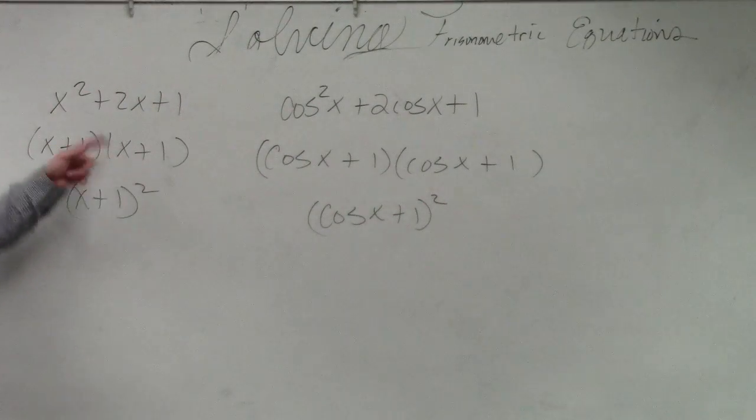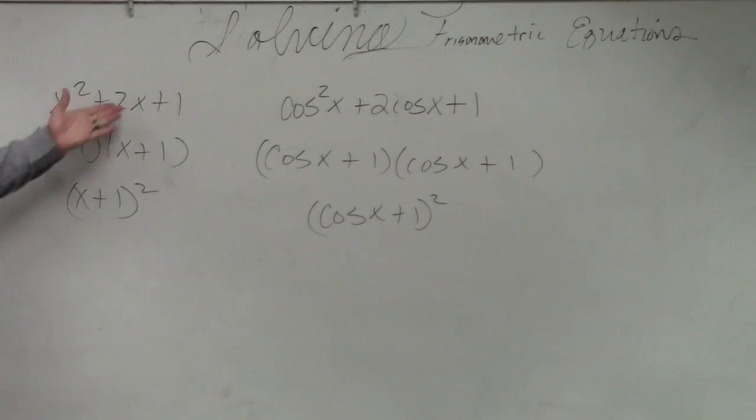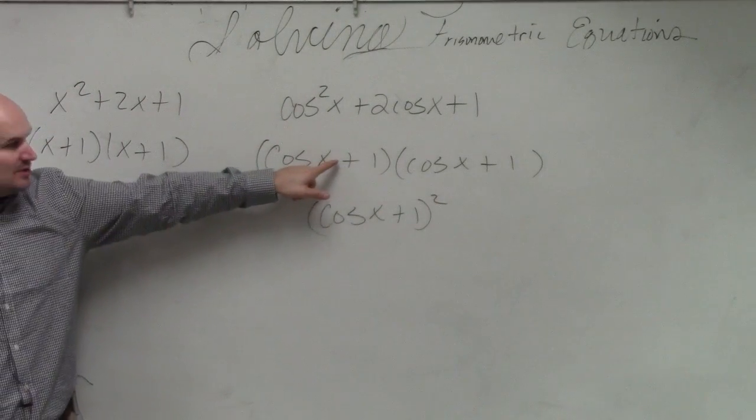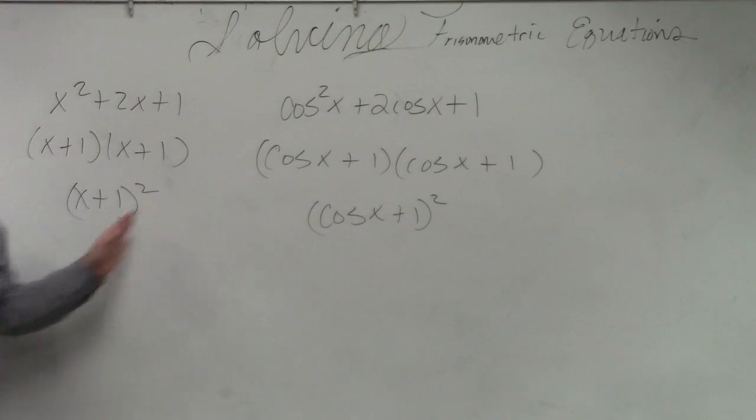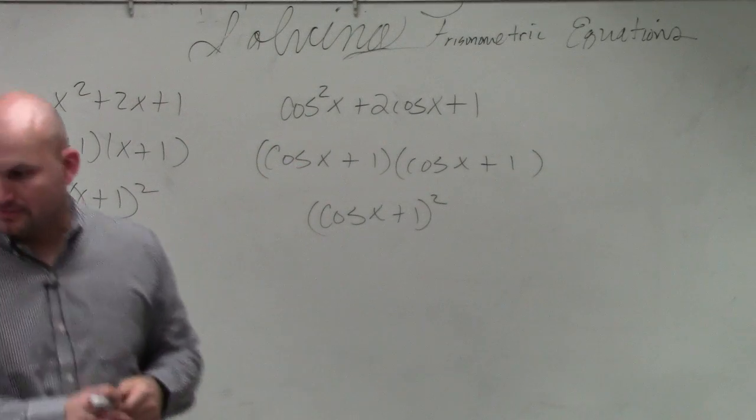Just like this. You didn't ask me where the two went when I did this, right? I just factored this. What two numbers multiply to give you one, add to give you two? x plus 1 times x plus 1. It's the same thing. I just replaced x with cosine of x. Same thing. Right? See it?